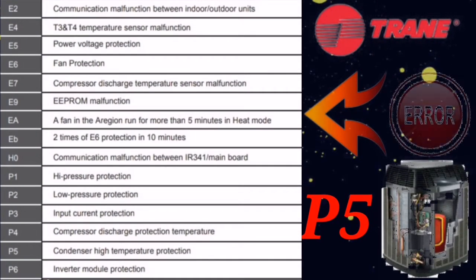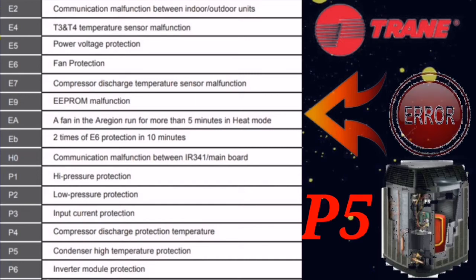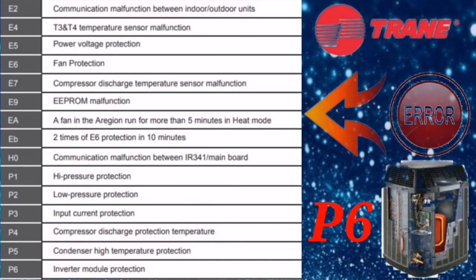The next error code is P5, which means condenser high temperature protection. First, check if the condenser of the outdoor unit is fully choked, preventing refrigerant from cooling properly — clean and service the condenser thoroughly. This error can also appear if the compressor is not working properly or if the outdoor fan motor is faulty, as the refrigerant in the condenser coil cannot cool down. Check the condenser coil for blockages and verify the fan motor is working properly.